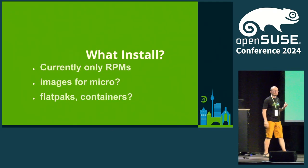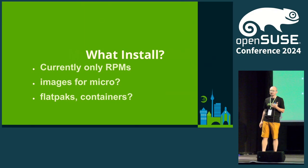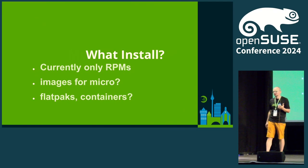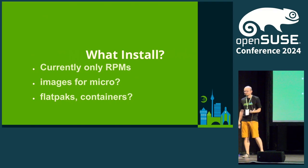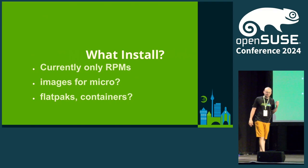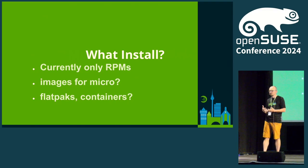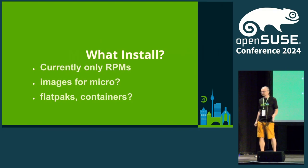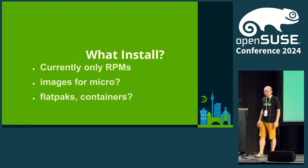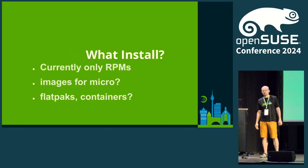Another topic is what to install. Currently Agama uses the common stack from YaST, which means installing RPMs. It's well-working because it's been working for years with many features. But there are new ways to install or new software stacks — like Flatpaks or containers. The question is whether Agama should start doing this. First, let's talk about images because that's the main deployment way for Micro OS 6 — installing images. It should not be hard to adapt Agama to install images.